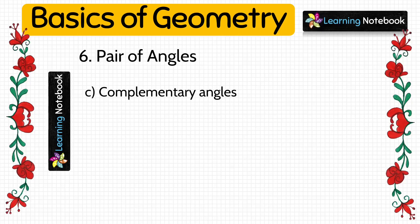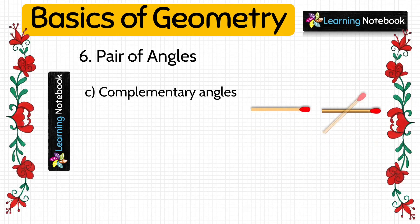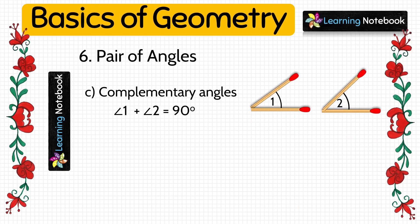Then we have complementary angles. Two angles are said to be complementary angles if the sum of their measures is 90 degrees. We will take four matchsticks to form angle 1 and angle 2 such that angle 1 plus angle 2 equals 90 degrees.